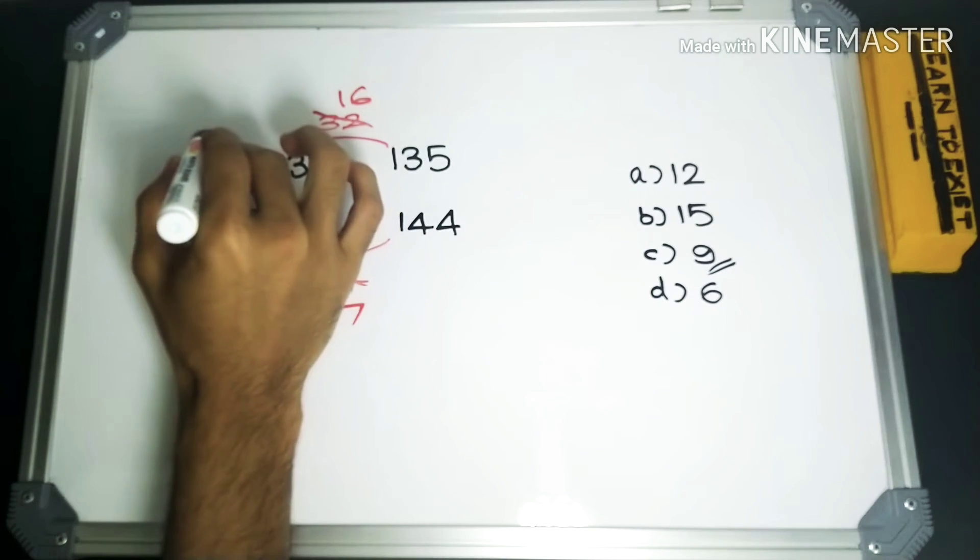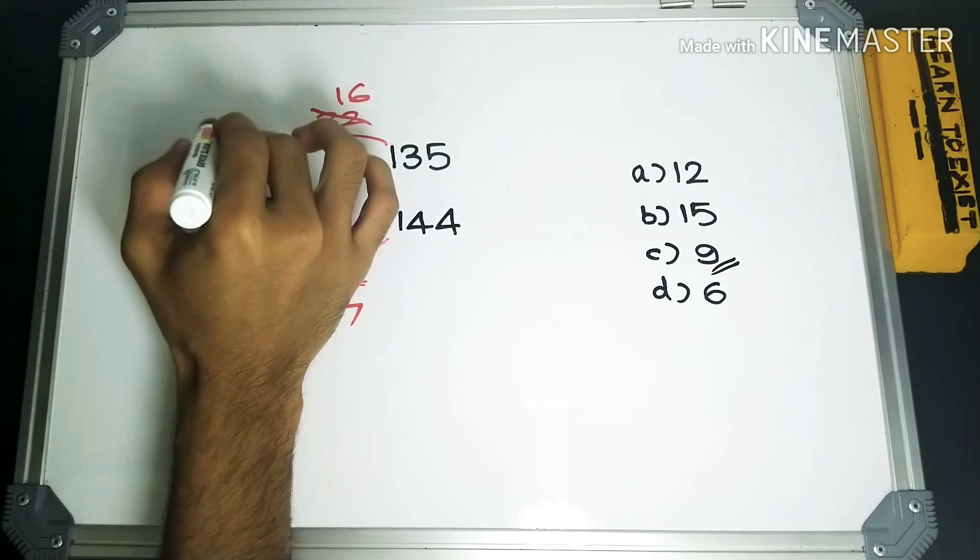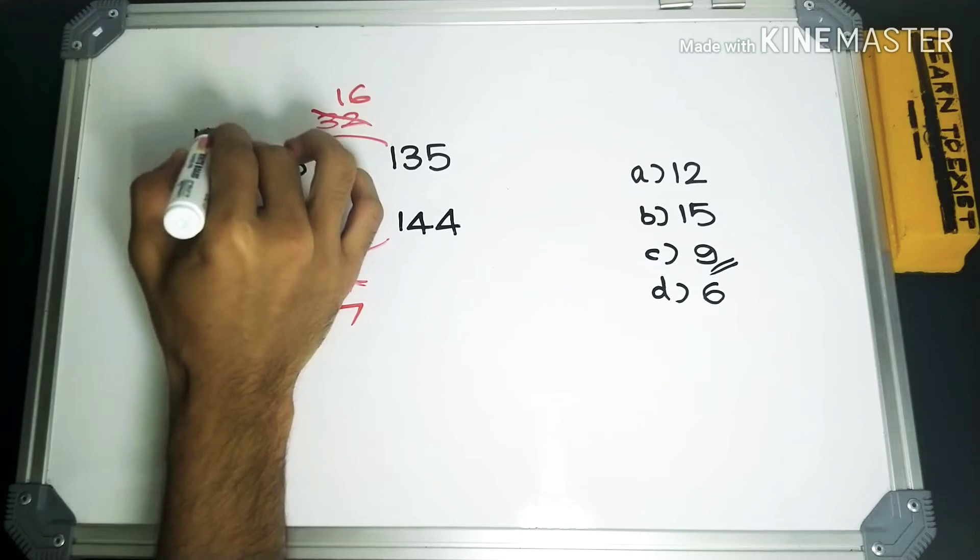Now if we check with each of these options, we can see that only 9, which when added with 103, is going to make it a multiple of 16. So this would be 112.